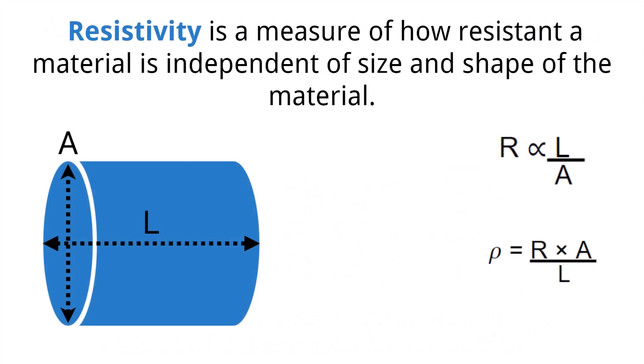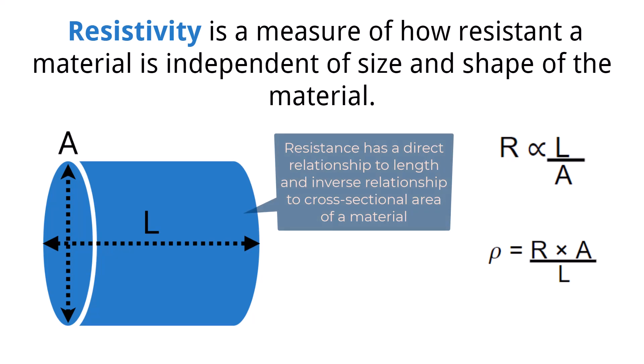The resistance of a material not only relies on the material itself, but also on the size and shape of the material. Resistance has a direct relationship with the length — as the length of a resistor increases, the resistance also increases. This makes sense since it increases the path the electron must travel, increasing the occurrence of collisions within the lattice structure of the resistor.